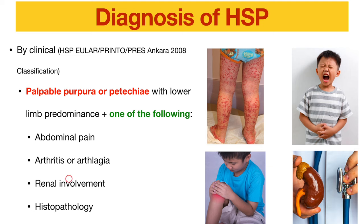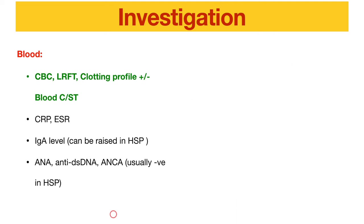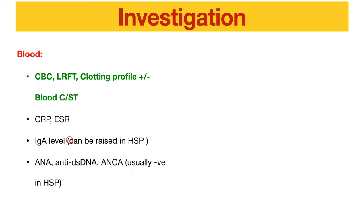Sometimes we perform skin biopsy or renal biopsy. For investigations, we take blood: CBC to check platelet and rule out thrombocytopenia, renal function test to look at creatinine, clotting profile to rule out coagulopathy, and blood culture if suspecting meningococcemia. We can also take inflammation markers like CRP and ESR.